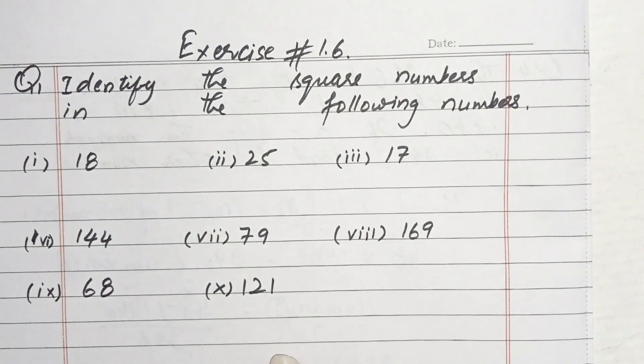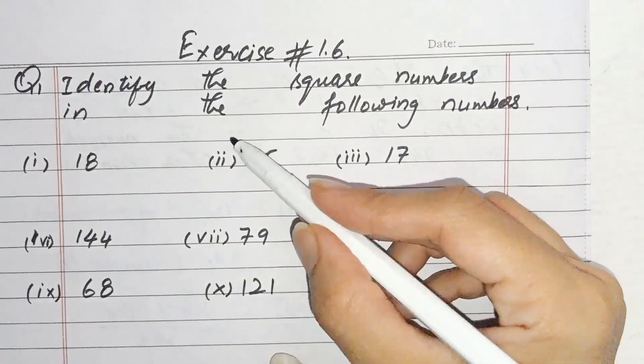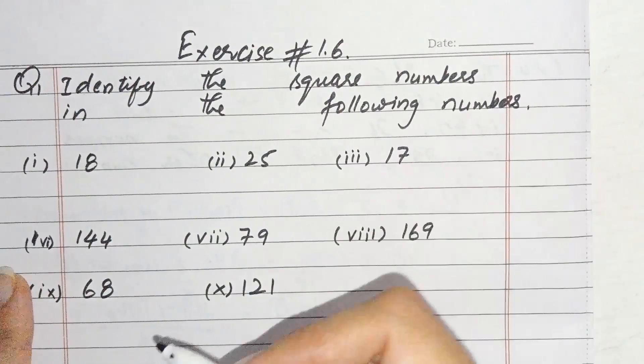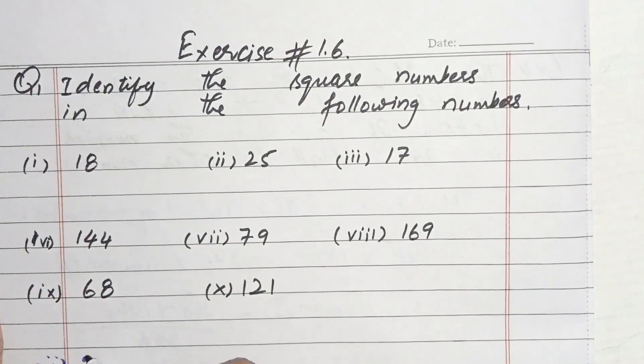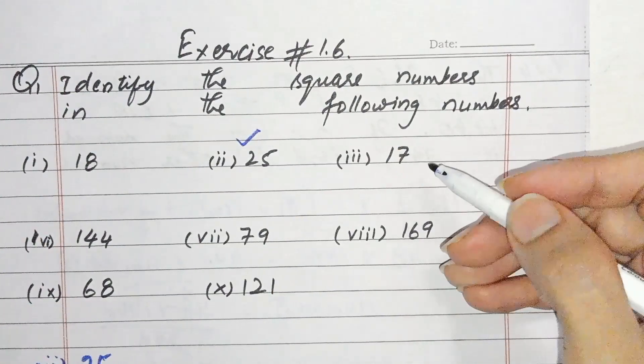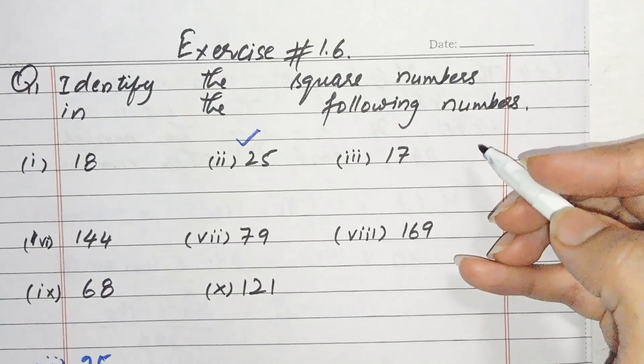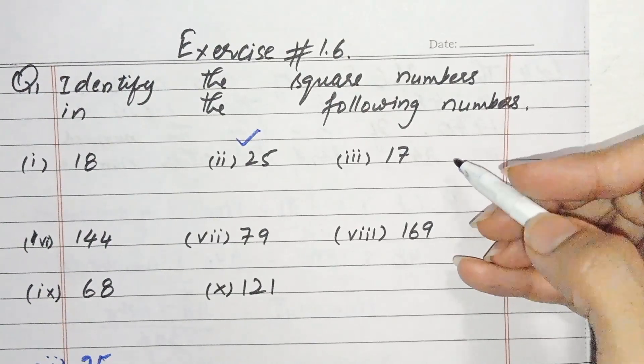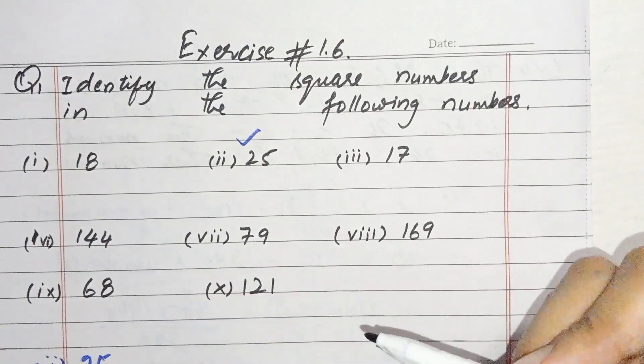2 times 2 equals 4, 3 times 3 equals 9, 4 times 4 equals 16, 5 times 5, these are square numbers. This is square number 1 times 25, this is square number. 17, and in my book 4th and 5th part we have to write 17.